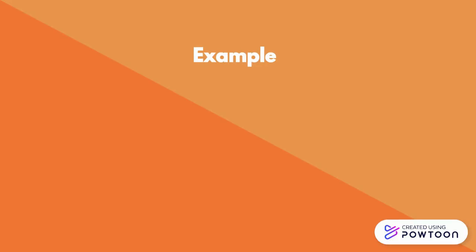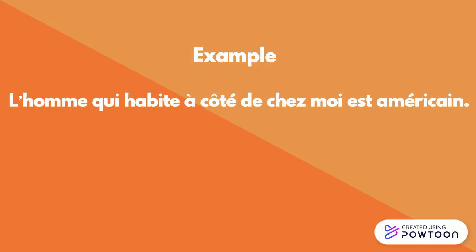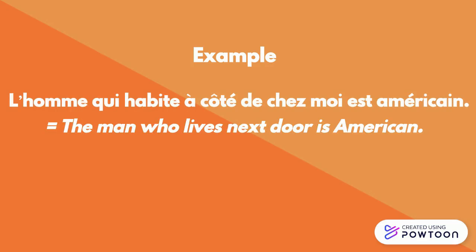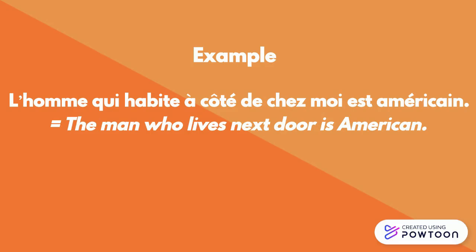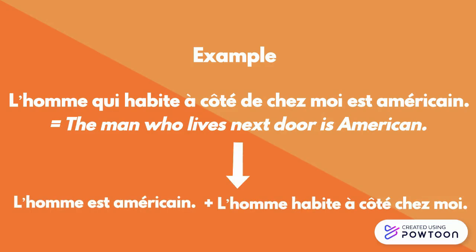An example will make things clearer. Take the sentence: l'homme qui habite à côté de chez moi est américain — the man who lives next door is American. Imagine that you have two sentences: l'homme est américain and l'homme habite à côté de chez moi. With the relative pronoun qui, I have connected them into one sentence and avoided repeating l'homme.